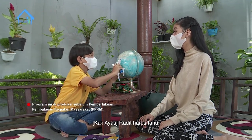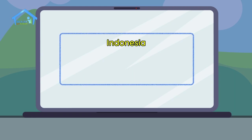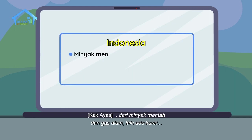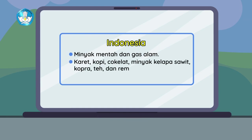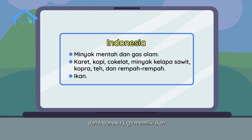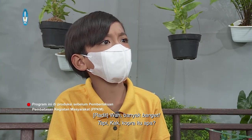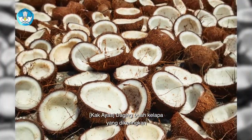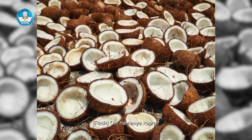Nah, Radit harus tahu, negara kita banyak sekali loh komoditasnya untuk diperdagangkan. Dari minyak mentah dan gas alam, lalu ada karet, kopi, coklat, minyak kelapa sawit, kopra, teh, dan rempah-rempah. Dan Indonesia juga memiliki ikan sebagai barang dagangannya untuk diekspor. Wah, banyak banget! Tapi Kak, kopra itu apa? Kopra adalah daging buah kelapa yang dikeringkan dan menjadi bahan baku pembuatan minyak kelapa serta turunannya.